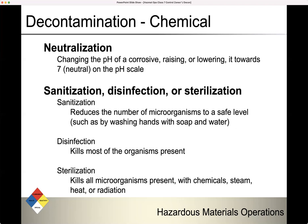Neutralization is changing the pH of a corrosive — either raising or lowering it toward 7 on the pH scale. There's also sanitization, disinfection, or sterilization — each is a different level of decontamination. Sanitation reduces the number of microorganisms to a safe level. Disinfection kills most of the organisms present. Sterilization kills all the microorganisms present using chemicals, steam, heat, or radiation. To summarize: sanitation reduces, disinfection kills most, sterilization kills all.